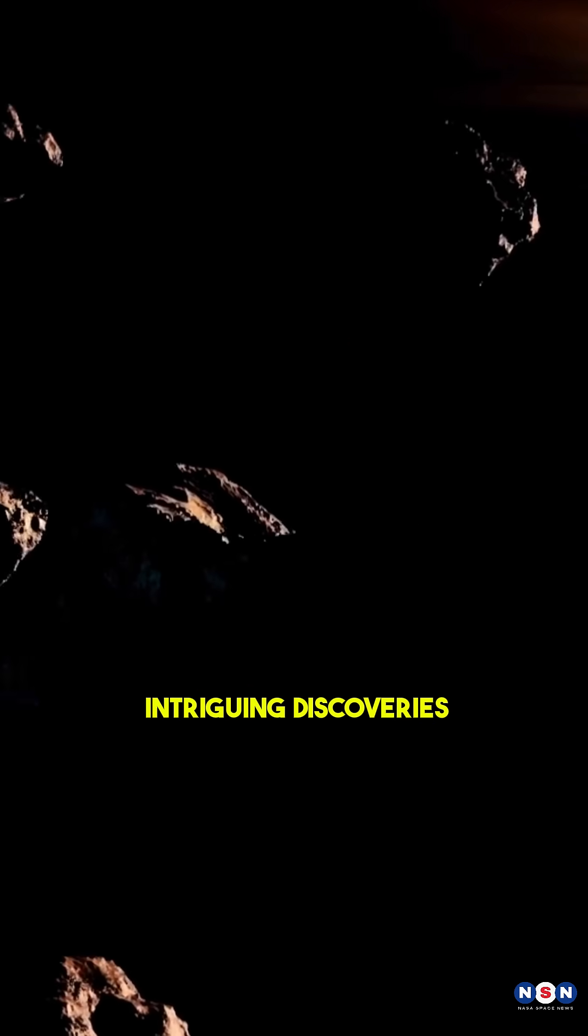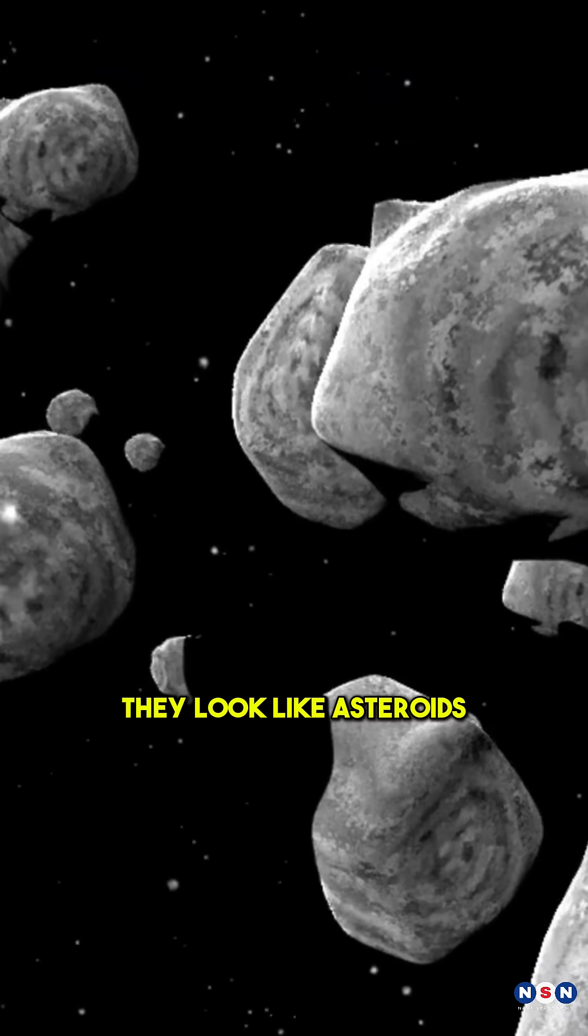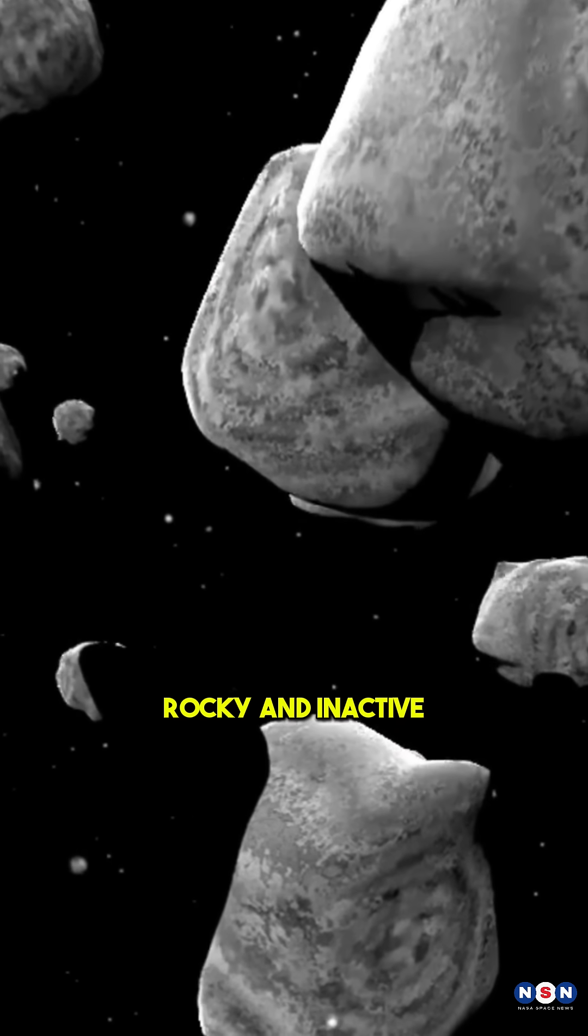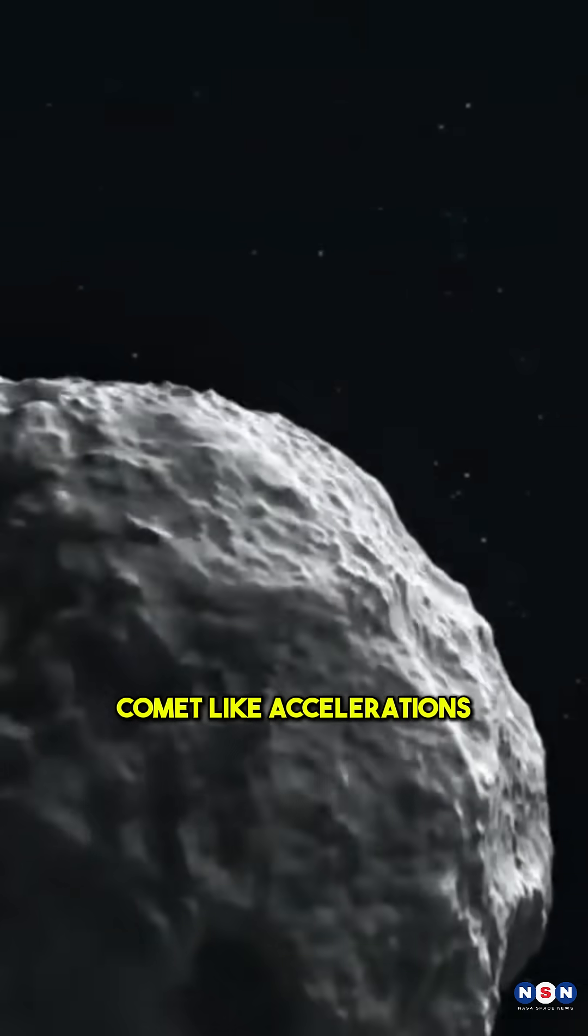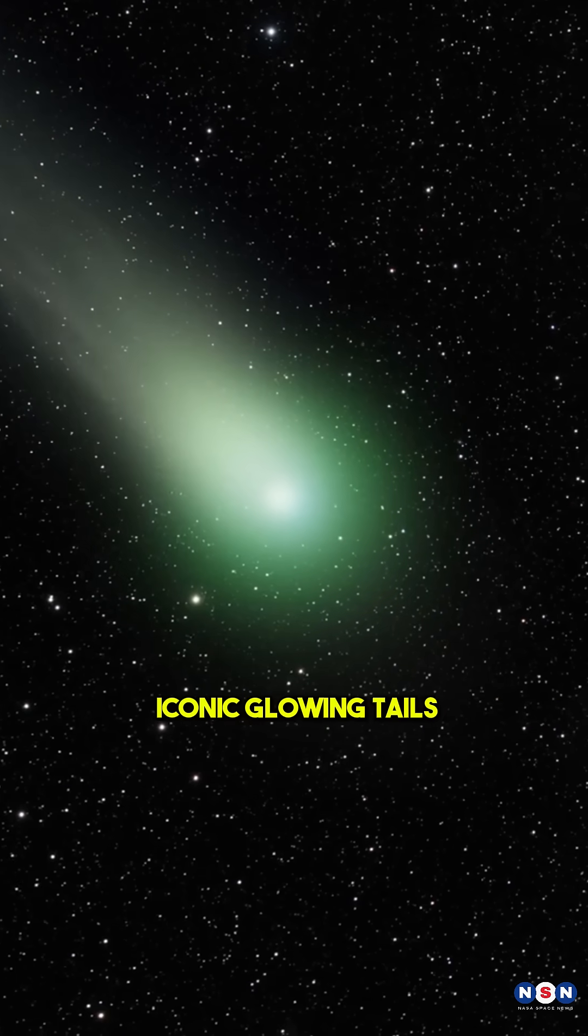Dark comets are one of the most intriguing discoveries in our solar system. They look like asteroids, rocky and inactive, but behave like comets, exhibiting strange, comet-like accelerations without the iconic glowing tails.